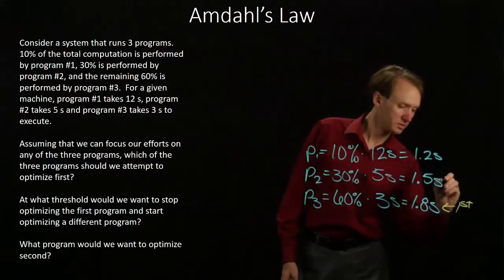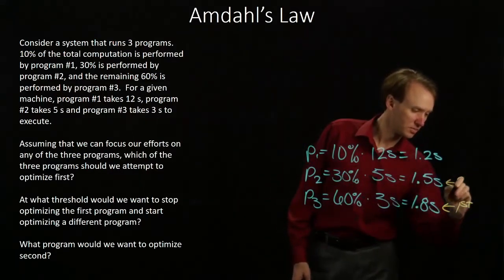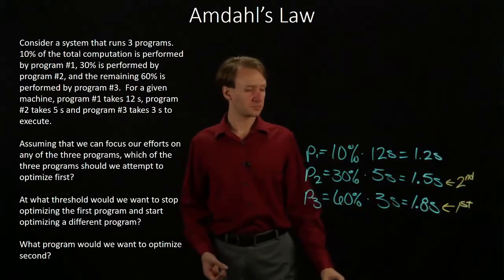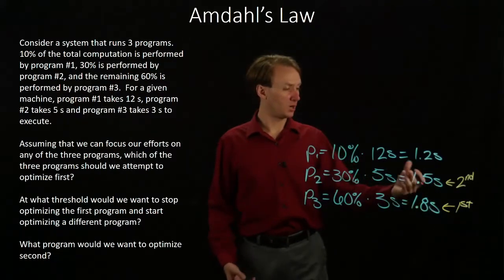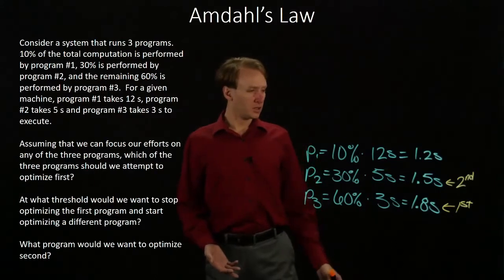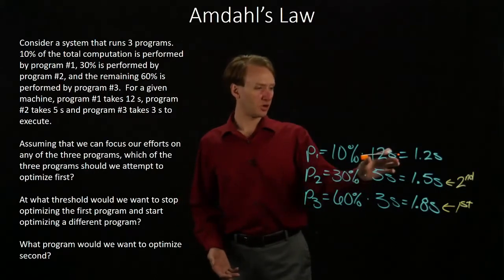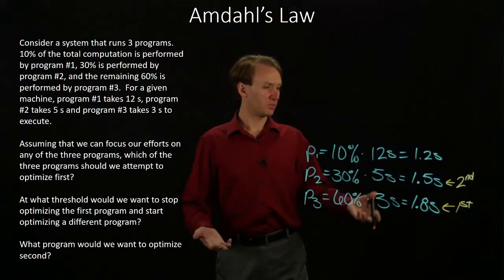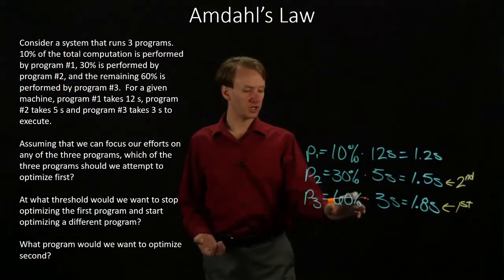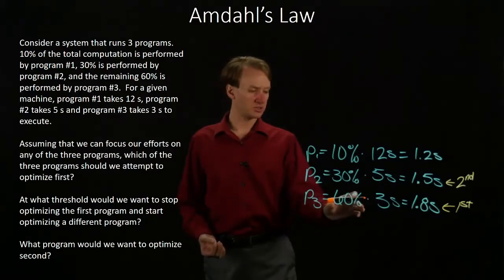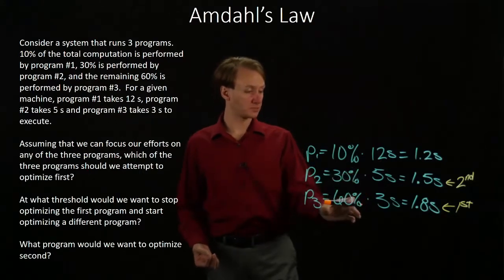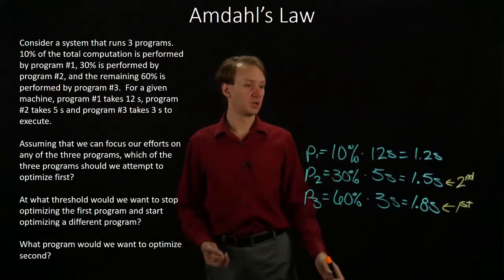Program 2 is taking the next most amount of time, so I would optimize it second. Then, maybe once I've improved those two quite a bit, I would work on Program 1. This may seem a little backwards — Program 1 is clearly much more expensive than either of the other two. But a whole lot more of my computation is related to Program 3: two times as much computation happens in Program 3 as in Program 2, and six times as much as in Program 1.